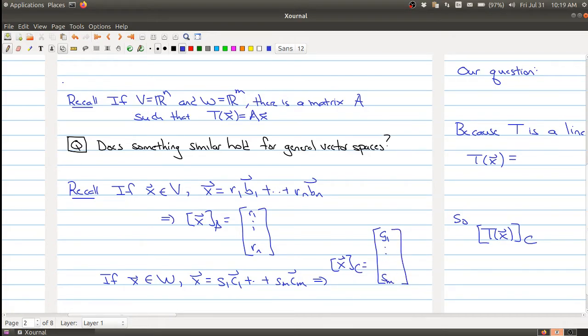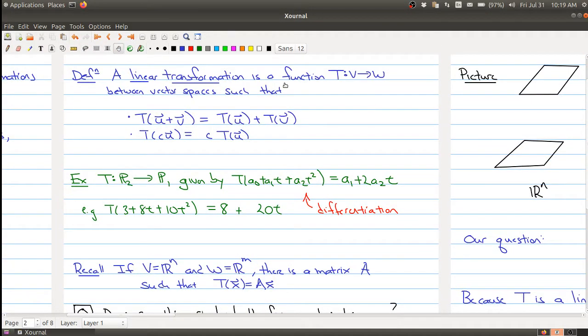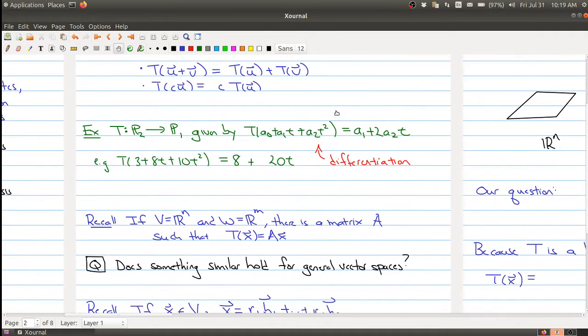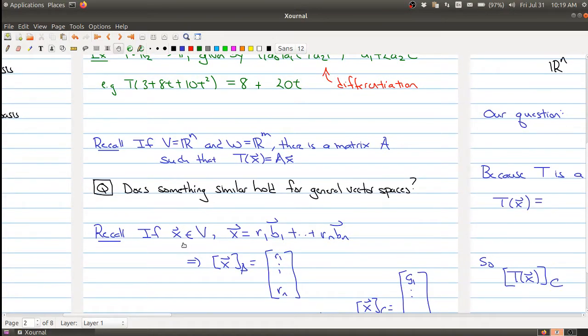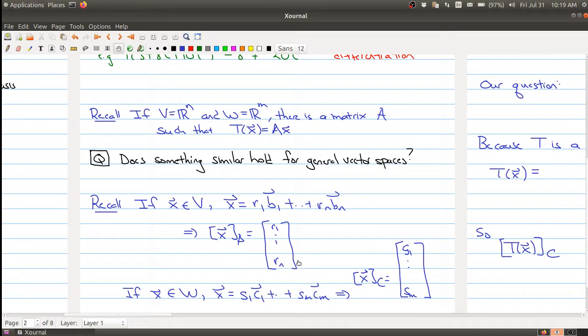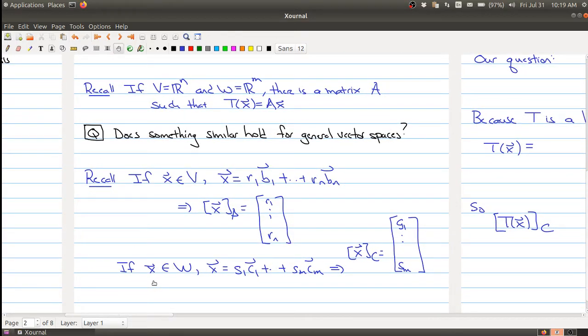Our original map, when we're looking at a linear transformation, takes whatever these objects are in V to objects in W. But at the same time, we can take an object in V and attach to it a vector in R^n, and we can attach a vector in W to a vector in R^m.